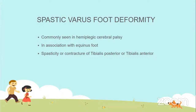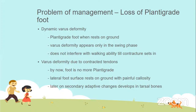The second type of deformity is spastic varus foot deformity, most commonly seen in hemiplegic cerebral palsy children, in association with equinus foot. Spasticity and contracture of the tendo achilles is associated with spasticity and contracture of tibialis posterior and tibialis anterior. In dynamic varus deformity, the foot is plantigrade when resting on the ground and the varus deformity appears only in the swing phase — it does not interfere with walking ability until contracture sets in.